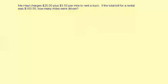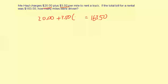Okay, let's take a look. We know the total bill is $163.50. So that equals the $20 plus $3.50 per mile times the number of miles. So I'm going to put $20 here plus $3.50 times X, since we don't know the number of miles.